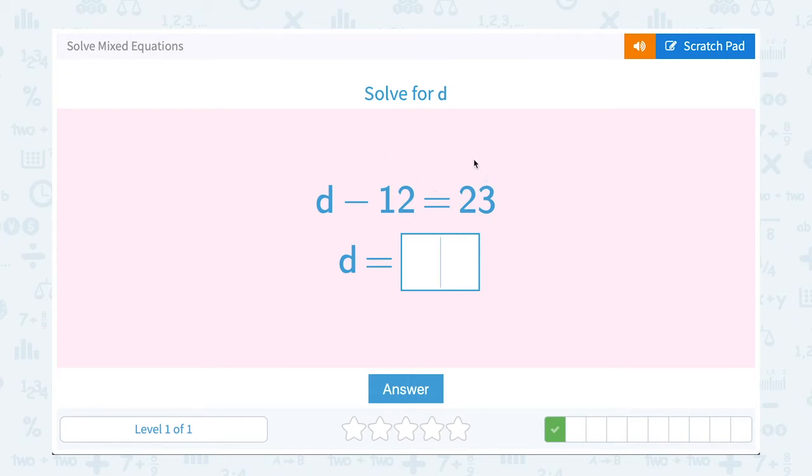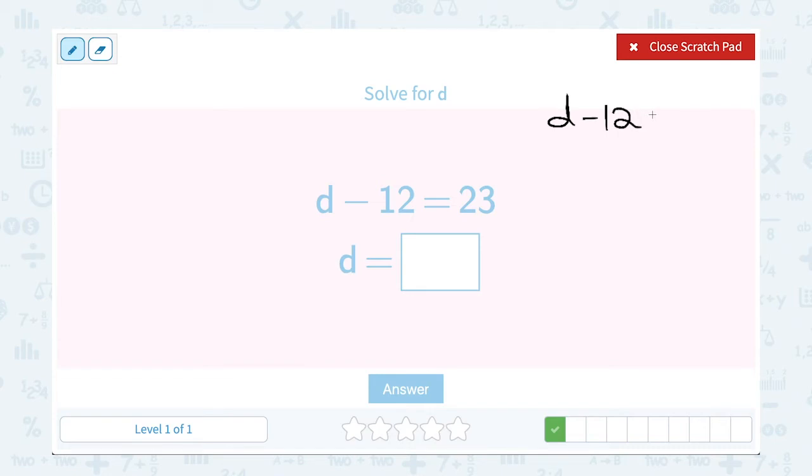D minus 12 equals 23, and we want to solve for D. Just like before, I'm going to see what I can do to get D all by itself. In this case, D is on the left side of my equal sign and it has a minus 12 after it. So I want to use inverses or opposites to cancel out that minus 12 part. The opposite or the inverse of subtracting 12 would be to add 12. And if I add 12 on the left side, to keep it balanced, I also have to add 12 on the right side. Minus 12 and plus 12 cancel out, leaving me with just D. Then I have to add 23 plus 12, which gives me 35. So D is equal to 35.